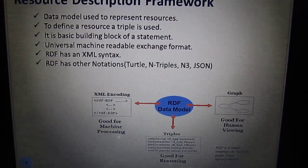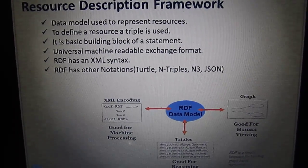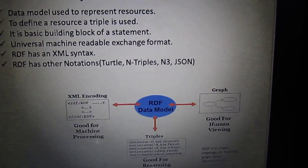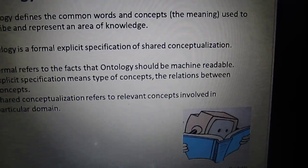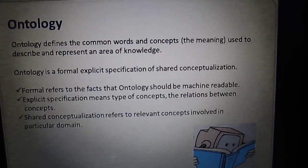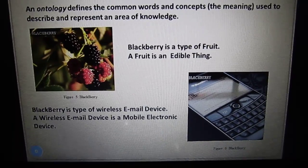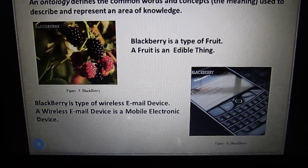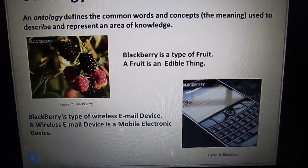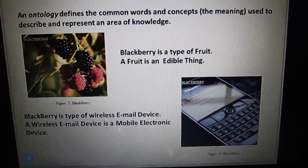RDF is used to describe a simple statement, i.e., subject, predicate, and object. However, to define an RDF vocabulary, we need a controlled vocabulary language, i.e., an ontology. Ontology is a main knowledge representation technique that defines knowledge — for example, the common words and concepts used to describe an area of knowledge. For instance, 'blackberry' is a fruit, an edible thing, whereas 'blackberry' is also a mobile device. Ontology is used to differentiate these by defining the concepts, properties, characteristics, attributes, data properties, and object properties.